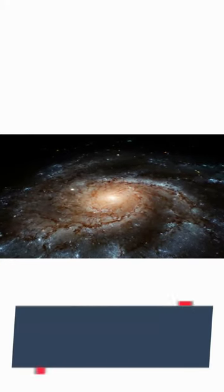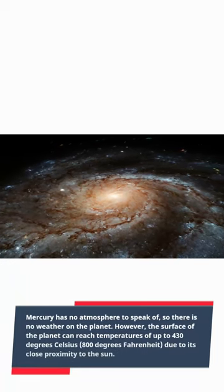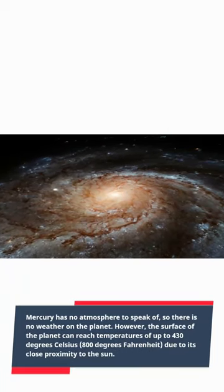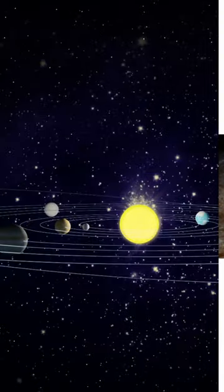Mercury has no atmosphere to speak of, so there is no weather on the planet. However, the surface of the planet can reach temperatures of up to 430 degrees Celsius, 800 degrees Fahrenheit, due to its close proximity to the Sun.